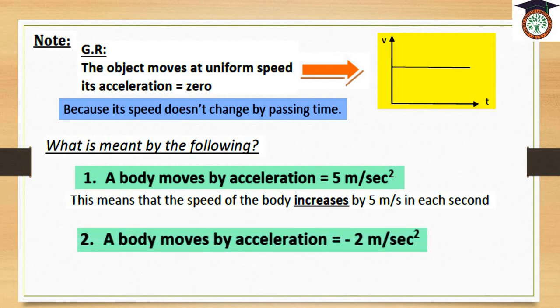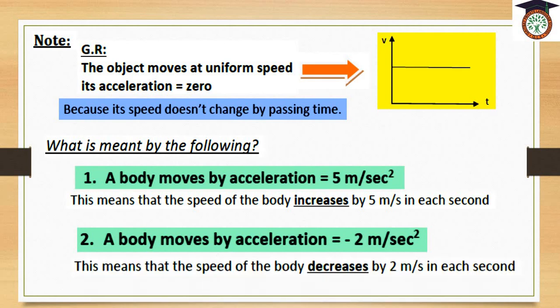Here we have another question: 'a body moves by acceleration negative 2 m/s².' This means that the speed of the body decreases by 2 meters per second in each second. Speed decreases because we have a negative sign, which means negative acceleration — the speed of the car decreases as the time passes.